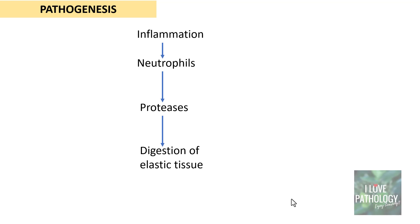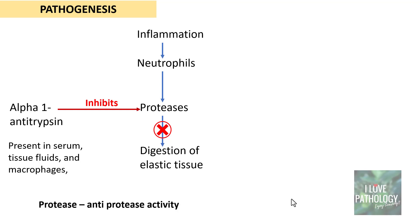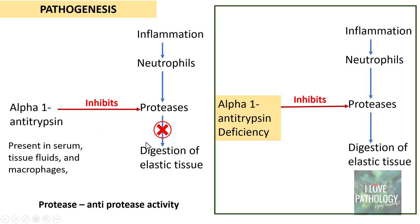There has to be a check mechanism for this process. Alpha-1 antitrypsin, normally found in serum, tissue fluids, and macrophages, inhibits elastase and thus controls the proteases released by neutrophils during inflammation — this is called protease-antiprotease activity. If there is alpha-1 antitrypsin deficiency, there is uninhibited activity of proteases, leading to increased elastin degradation and digestion of elastic tissue in the lung parenchyma.